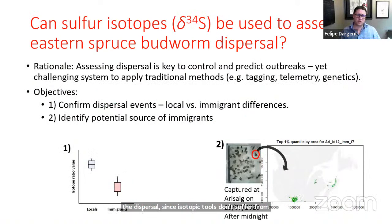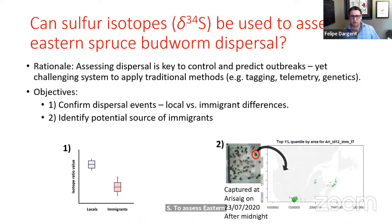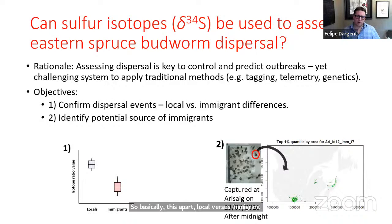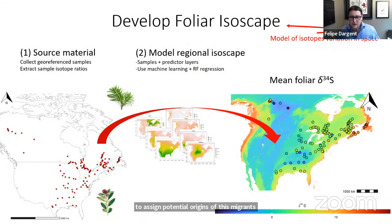In a nutshell, what I'm trying to show you today is our test to see whether we can use sulfur isotopes — δ34S — to assess eastern spruce budworm dispersal. The two main objectives are: first, to confirm whether dispersal events have occurred at a site by teasing apart local versus immigrant individuals; and second, once we have a good idea of the local isotopic signal, to use analytical techniques and modeling to assign potential origins of migrants.